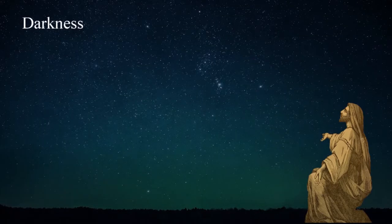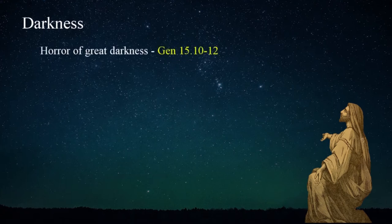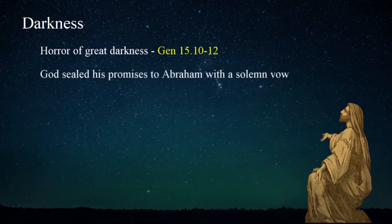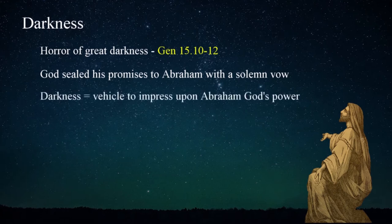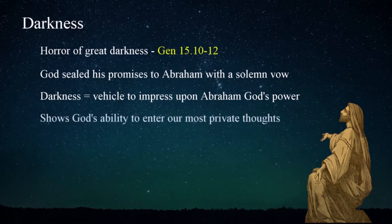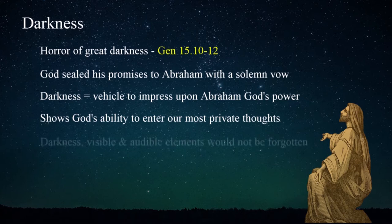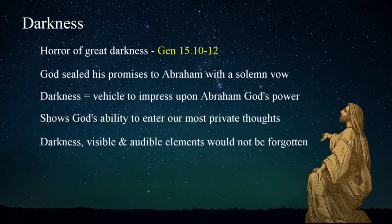In God's restatement of his promises to Abraham when asked about an heir, God caused a sleep to come on the patriarch that's described as a horror of great darkness in Genesis 15:10-12. It was during this episode that God sealed his promises with Abraham with a solemn vow and foretold of events that would bring his offspring to the land of Canaan and eventually bless all families of the earth in the coming of the Messiah. God used darkness in this instance as a vehicle to impress on Abraham the seriousness and depth of his power. The ability to induce such a state and then communicate in language and visible forms at the same time is testament to the ability of God to enter even our most private thoughts.